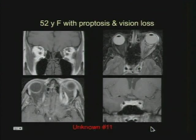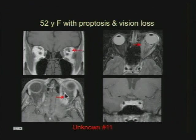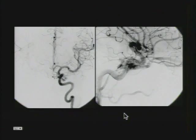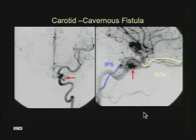The last unknown case is a 52-year-old female with proptosis and vision loss. On the coronal T1-weighted, you can see the superior ophthalmic vein, which is enlarged, and the extraocular muscles are enlarged. On the axial T2, there's enlargement of the extraocular muscles and retrobulbar stranding. The superior ophthalmic vein is enlarged again. On the coronal post-contrast, you see bowing and asymmetric enlargement of the cavernous sinus. These are the classic cross-sectional imaging features for a CC fistula. On the conventional angiogram — an injection of the left internal carotid artery — you can see early filling into the cavernous sinus, draining out the superior ophthalmic vein and down into the inferior petrosal sinus. This is a carotid-cavernous fistula.